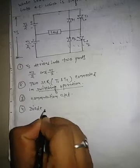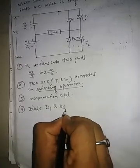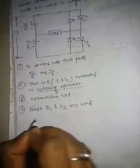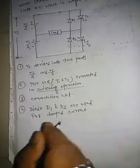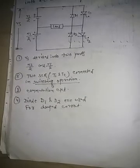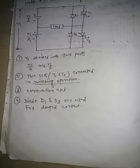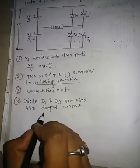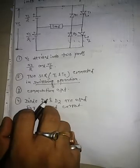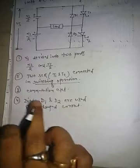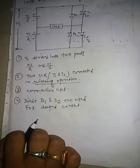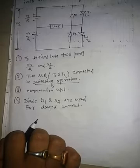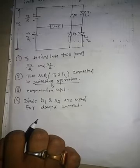Diodes D1 and D2 are used for damped current. There are three types of damping: over-damped, under-damped, and critically damped. When an RC or RLC circuit is connected, damped current flows through diodes D1 and D2. When the load is purely resistive, no damped current flows. But when the load is inductive, capacitive, or a combination of RLC, damped current flows through diodes D1 and D2.